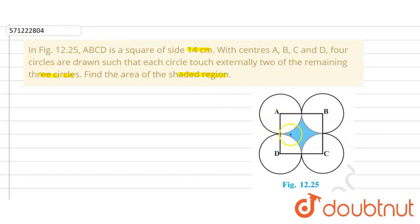So here we have to find the area of this shaded region and that shaded region will be equal to the area of square minus area of these four quadrants. So here it is given that the side of the square is 14 centimeter.